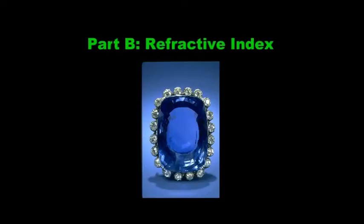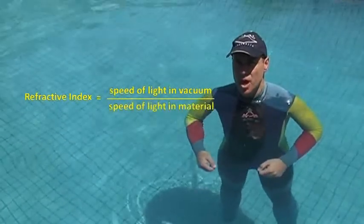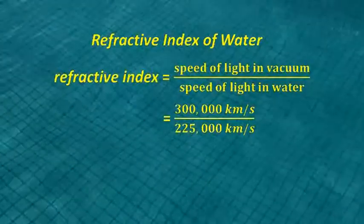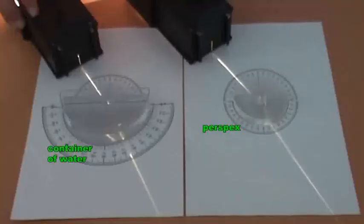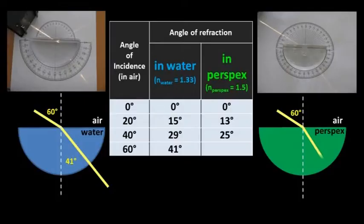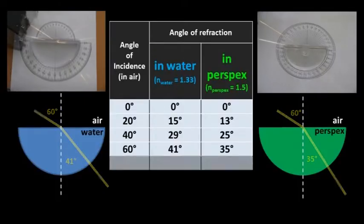In part B, students learn about refractive index and we show them, using water and perspex as examples, how the refractive index of different materials affects how much a light beam will refract.